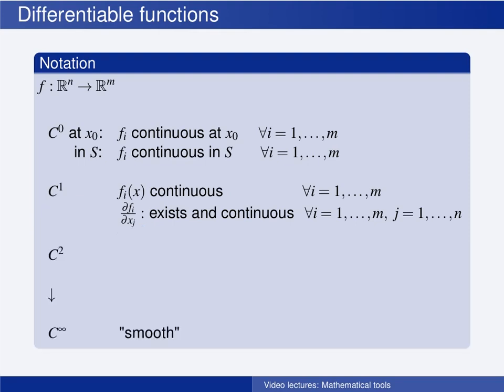If also the second order derivatives of all elements exist and are continuous, then the function f is two times continuously differentiable and we write this C^2.